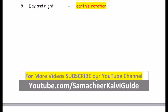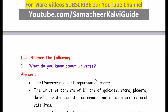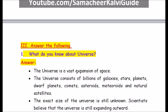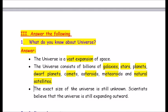Roman number 3 — Answer the following. Question number 1: What do you know about the universe? Answer: The universe is a vast expansion of space. It consists of billions of galaxies, stars, planets, dwarf planets, comets, asteroids, meteoroids and natural satellites. The exact size of the universe is still unknown; scientists believe the universe is still expanding outward.